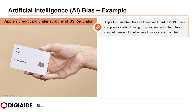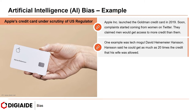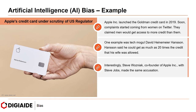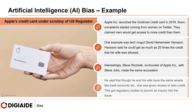Apple launched a Goldman Sachs credit card in 2019. Soon, complaints started coming from women on Twitter, claiming men would get access to more credit than them. One example was tech mogul David Heinemeier Hansson, who said he could get as much as 20 times the credit his wife was allowed. Steve Wozniak, co-founder of Apple with Steve Jobs, made the same accusation — he said that he and his wife have the same assets and linked bank accounts, yet she was given access to less credit. This prompted regulatory bodies to launch an inquiry. According to a March 2021 statement, the New York Department of Financial Services found that Goldman Sachs did not use any discriminatory practices in the credit card distribution process.